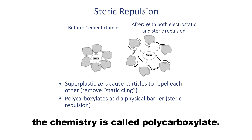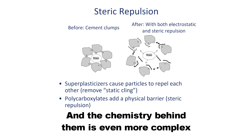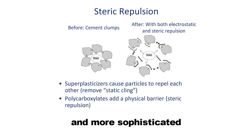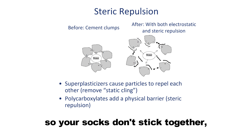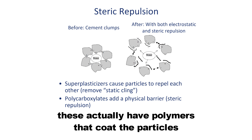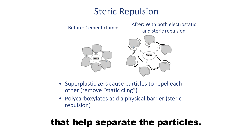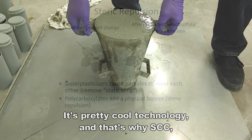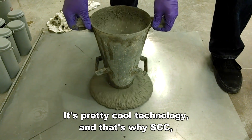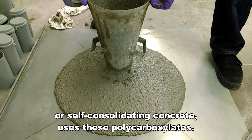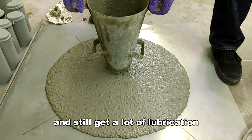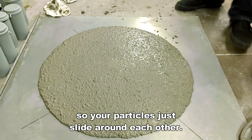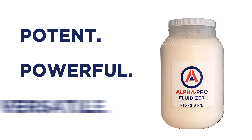The chemistry of the strongest superplasticizers is called polycarboxylate. The chemistry behind them is even more complex and sophisticated, because instead of just acting like a dryer sheet that you throw in your dryer so your socks don't stick together, these actually have polymers that coat the particles and act like a physical barrier that helps separate the particles. It's called steric repulsion. That's why SCC, or self-consolidating concrete, uses these polycarboxylates. You can use a lot less water and still get a lot of lubrication, so your particles just slide around each other. Very, very potent, very powerful, very versatile.